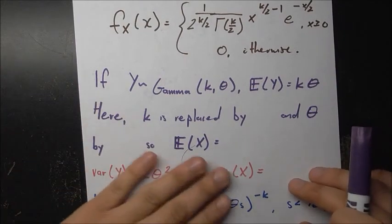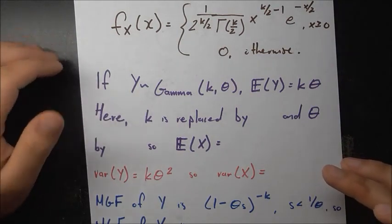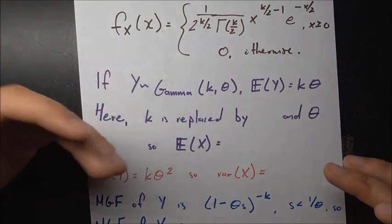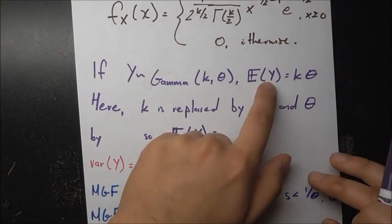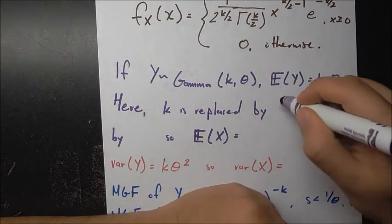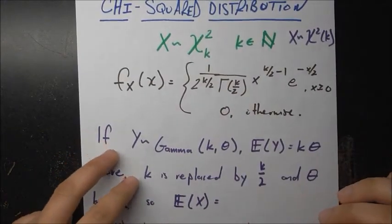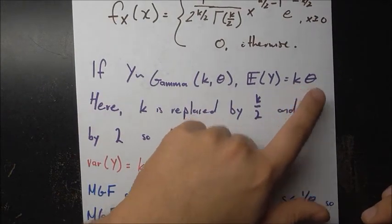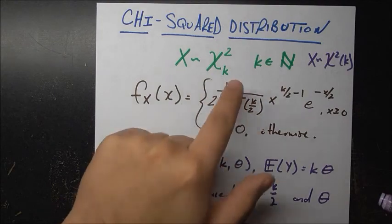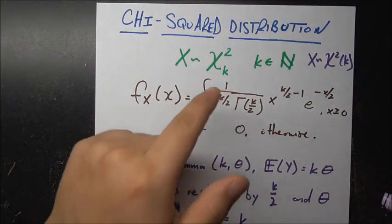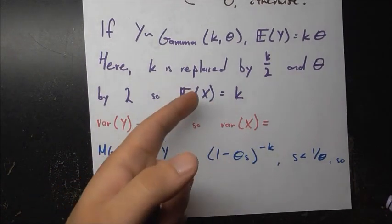Now let's find the expected value, variance, and MGF. Since the expected value of a gamma distribution with parameters k and theta is k·theta, and here k is replaced by k/2 and theta by 2, the expected value of x is (k/2)·2 = k. So the expected value of a chi-squared distribution with parameter k — often called the number of degrees of freedom — is simply k.